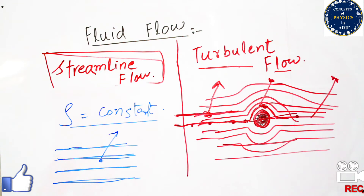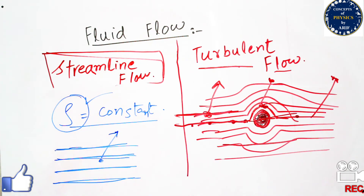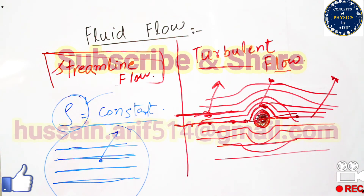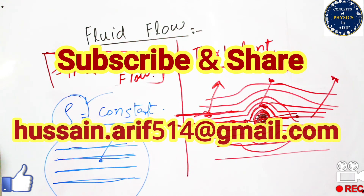Up till now we have finished the difference between streamline and turbulent flow. In addition, we discussed the three attributes of streamline flow: the fluid should be incompressible (density is constant), the fluid should be non-viscous (no internal friction between layers), and the flow should be steady.